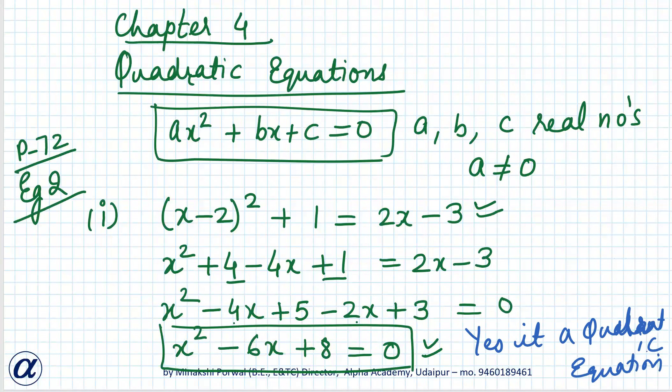Is it clear to everybody? I'll give you some questions to solve. Second question: x(x+1) + 8 = (x+2)(x-2). So it is x² + x + 8.